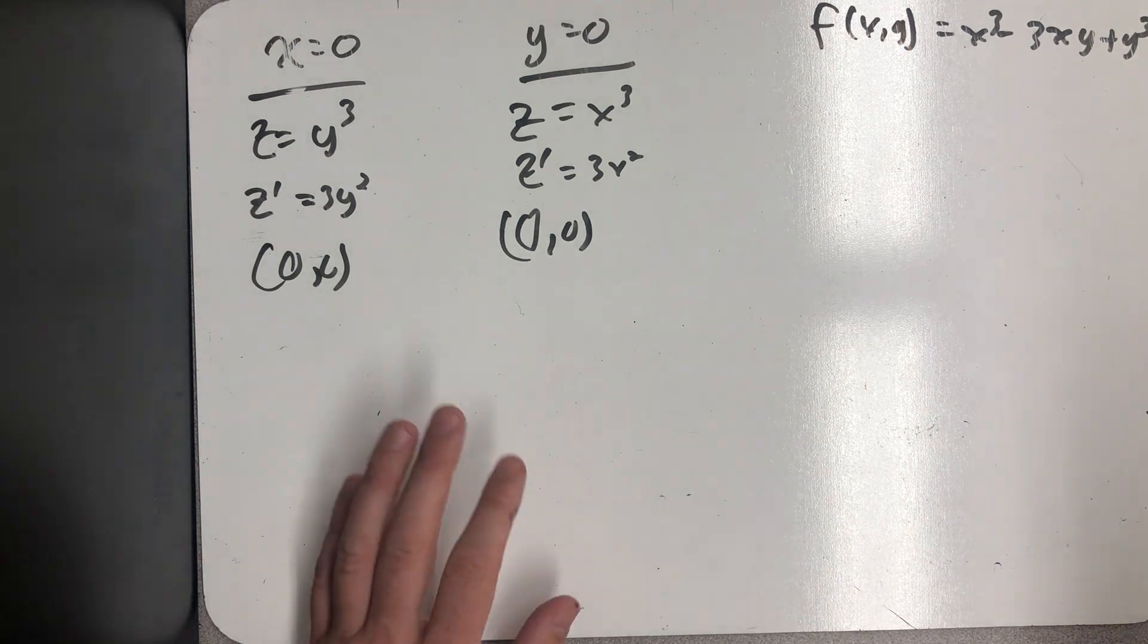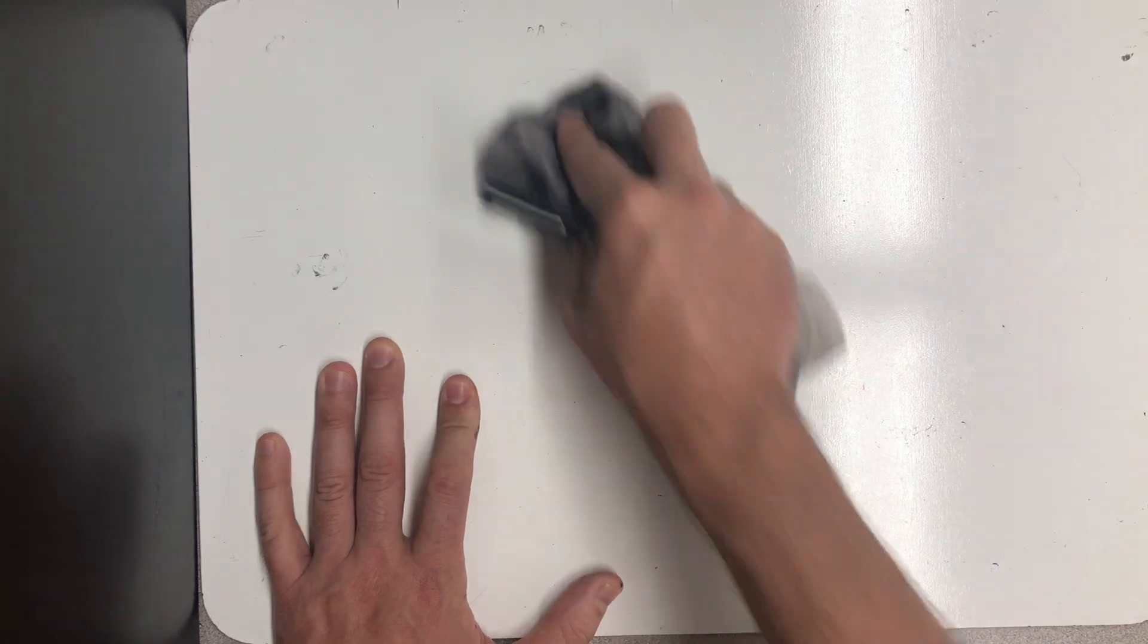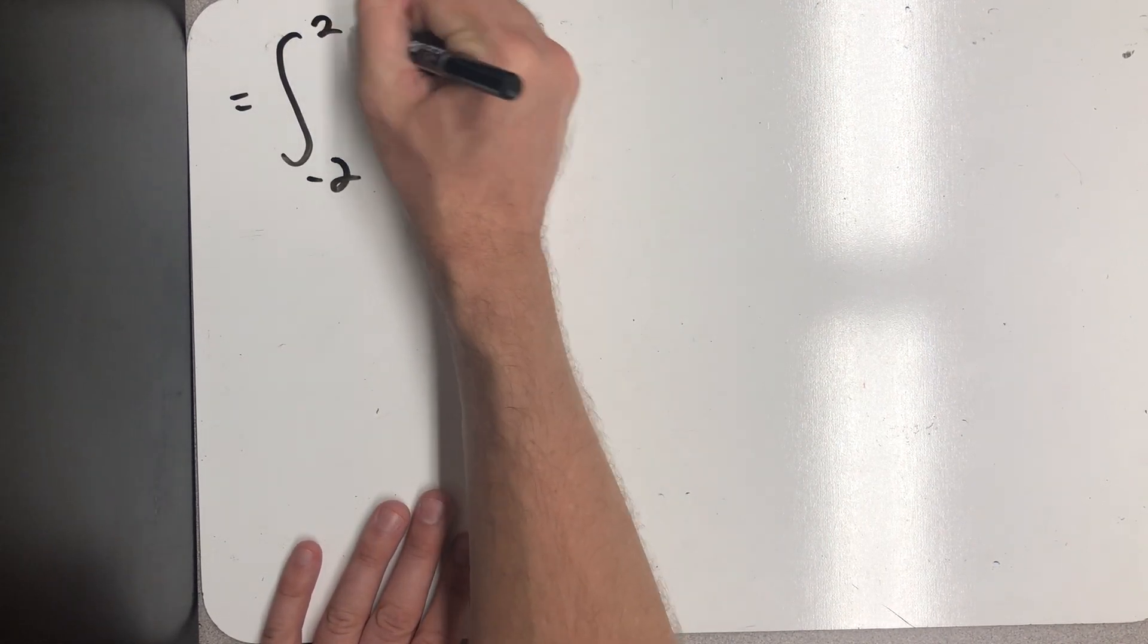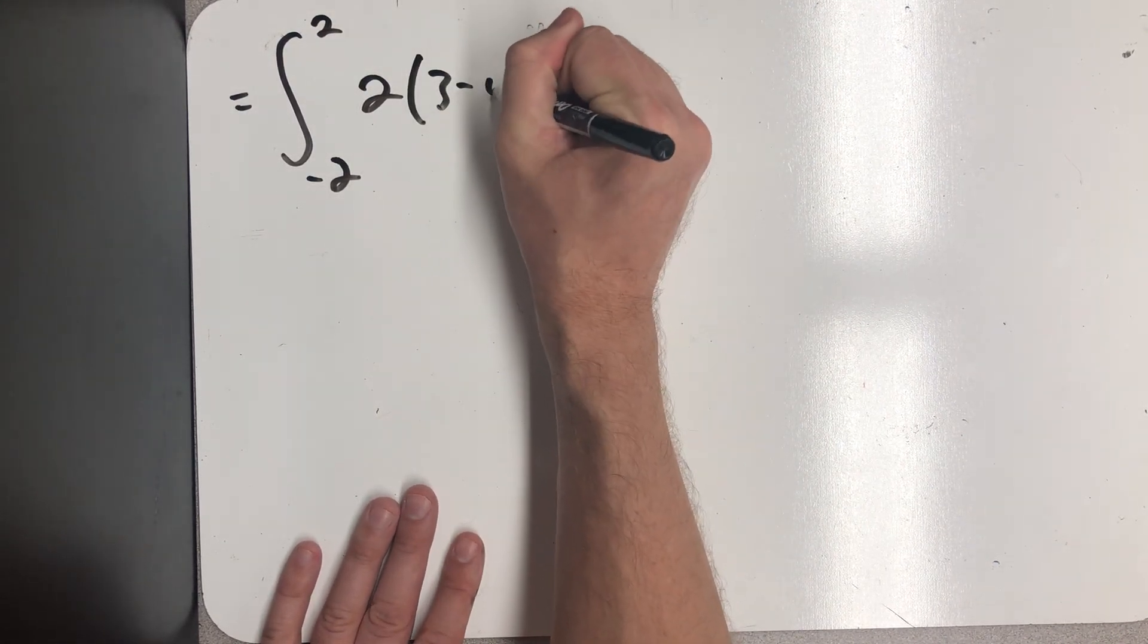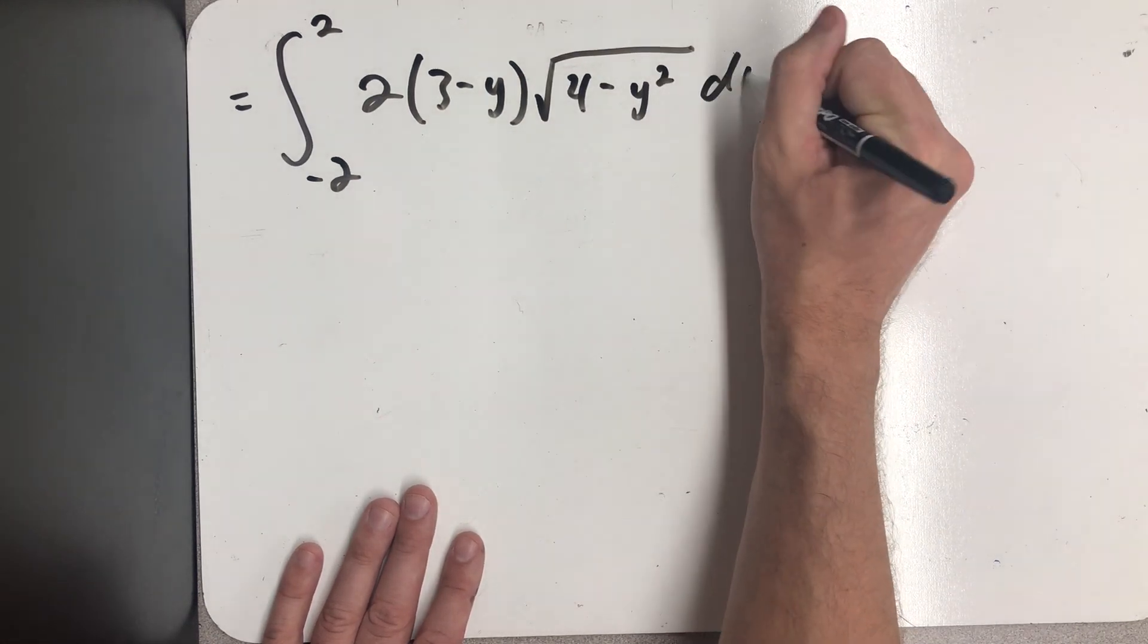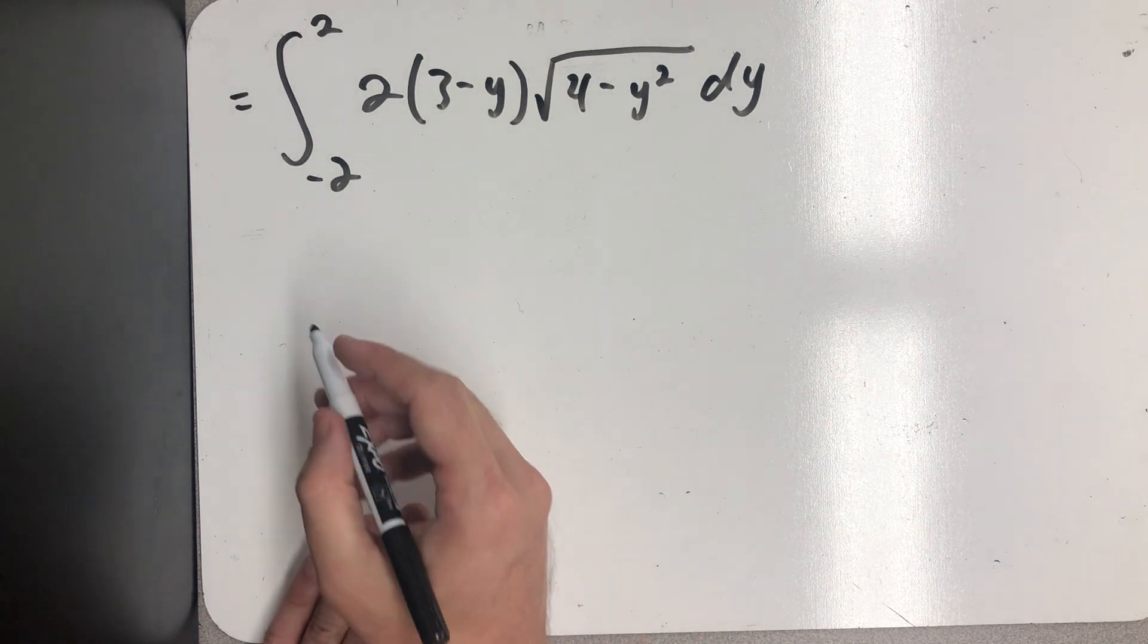Hang on just a second. Apparently, I had something left over on this last board from a different lesson. We're not going to let that slow us down. All right. So I'd have the integral from minus 2 to 2 of 2 times 3 minus y times the square root of 4 minus y squared, which I'm going to choose to write as two different integrals.